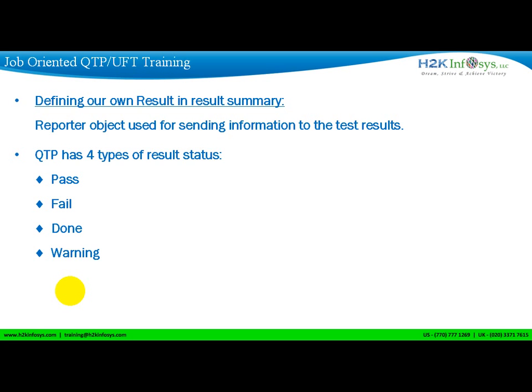Or you can also put some warnings in your script. A warning means you don't really want to fail your script, but you want to put some warning in your message. For example, you are trying to click on a button that doesn't really stop your workflow because those are optional things. If that optional button is not enabled, you put it in your warning messages saying the optional button is not enabled. Warning means you didn't really want to fail your script, but you want to put a warning message so that script execution will continue — whereas if you say fail, your script execution will stop there.